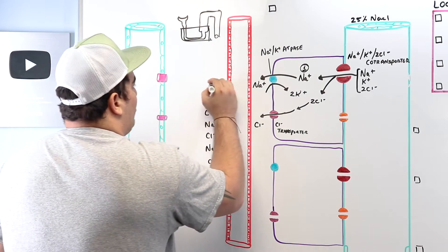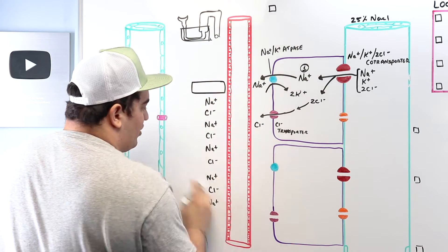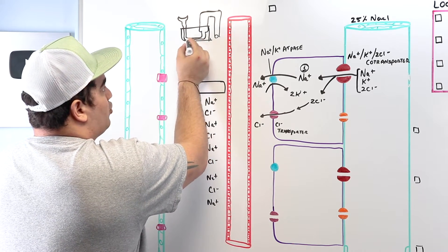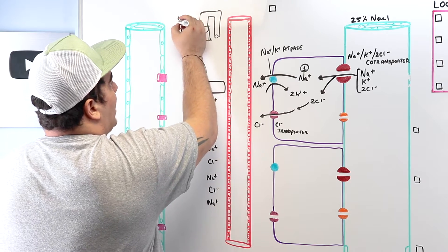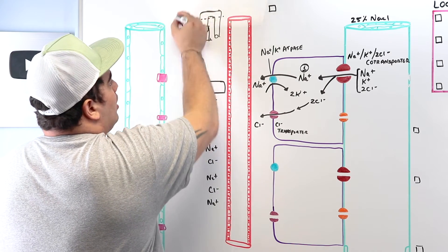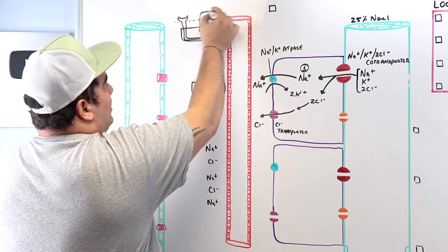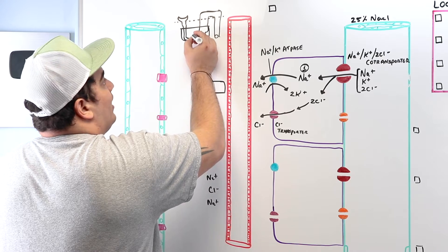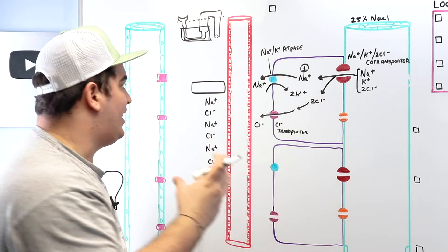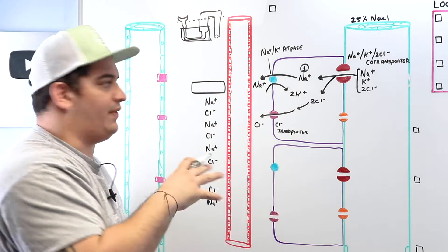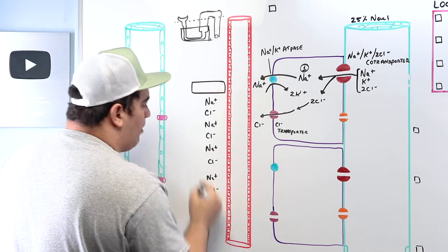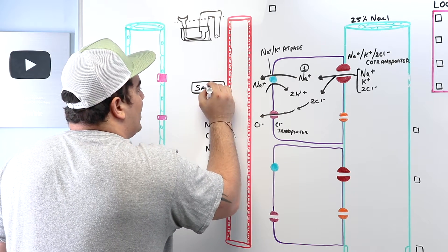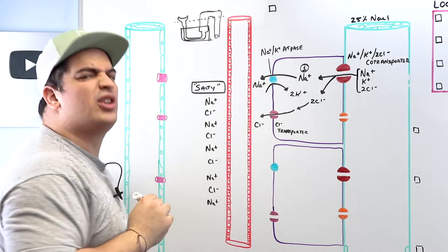Why is that significant? As you're coming down the descending limb, one of the big components is water. Water loves to flow from areas of low salt concentration to areas of high salt concentration. In this case, the interstitium is very salty. So water starts moving down through the descending limb, and as it moves down, it sees the high salt concentration and moves out into this super salty area.